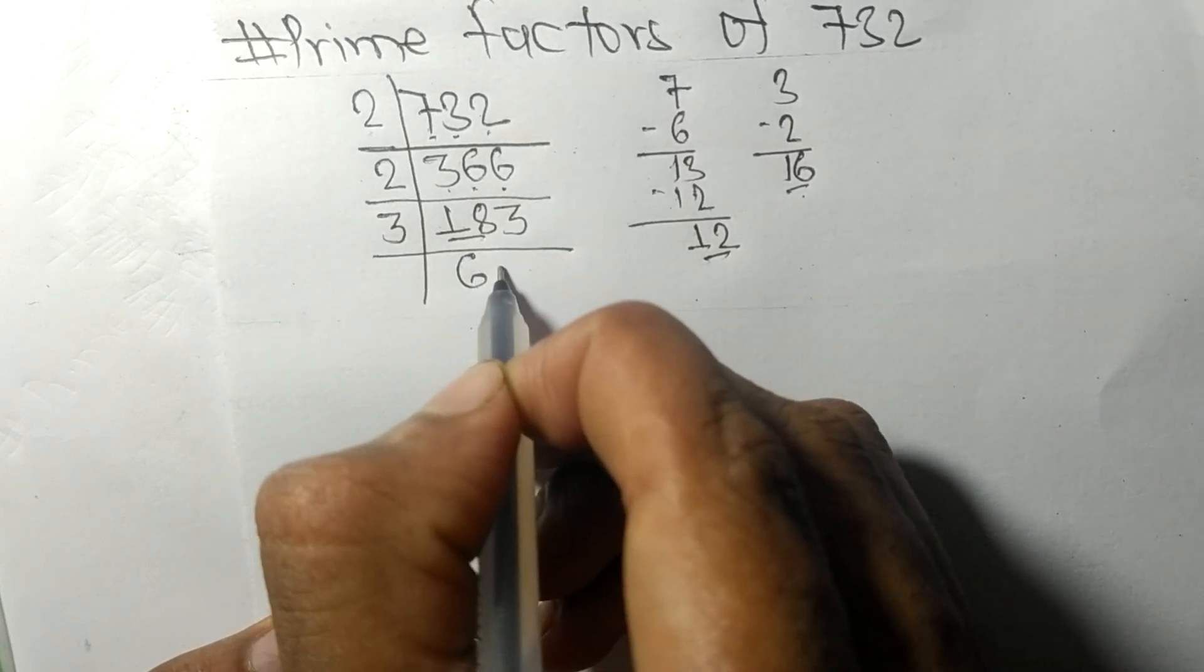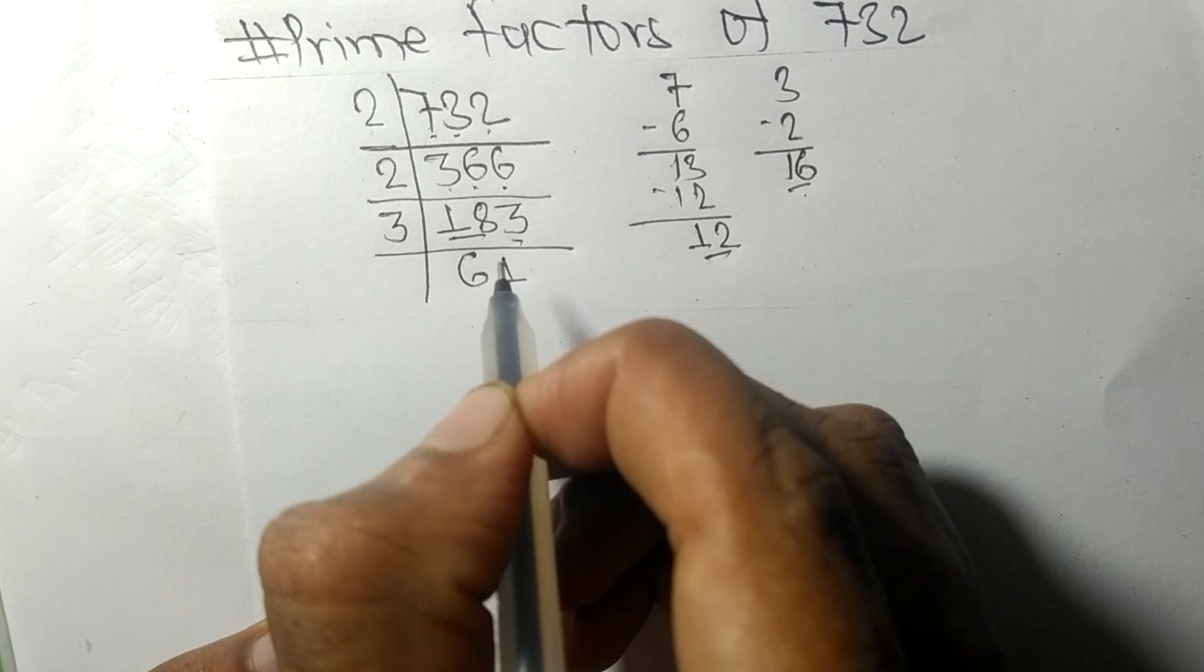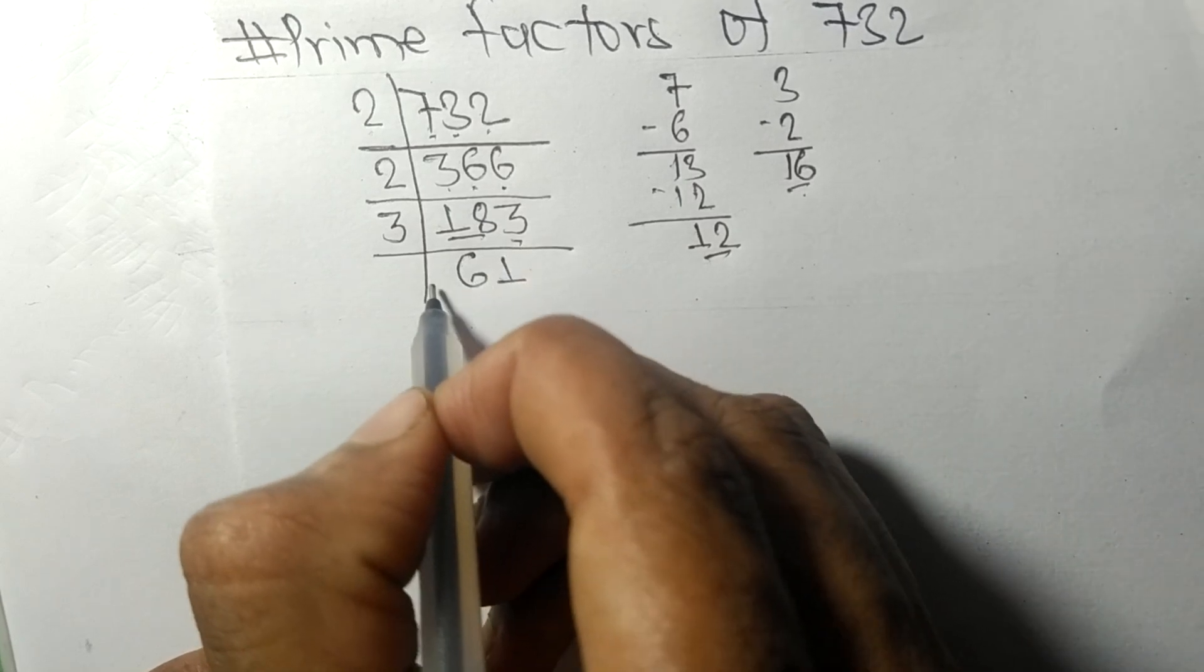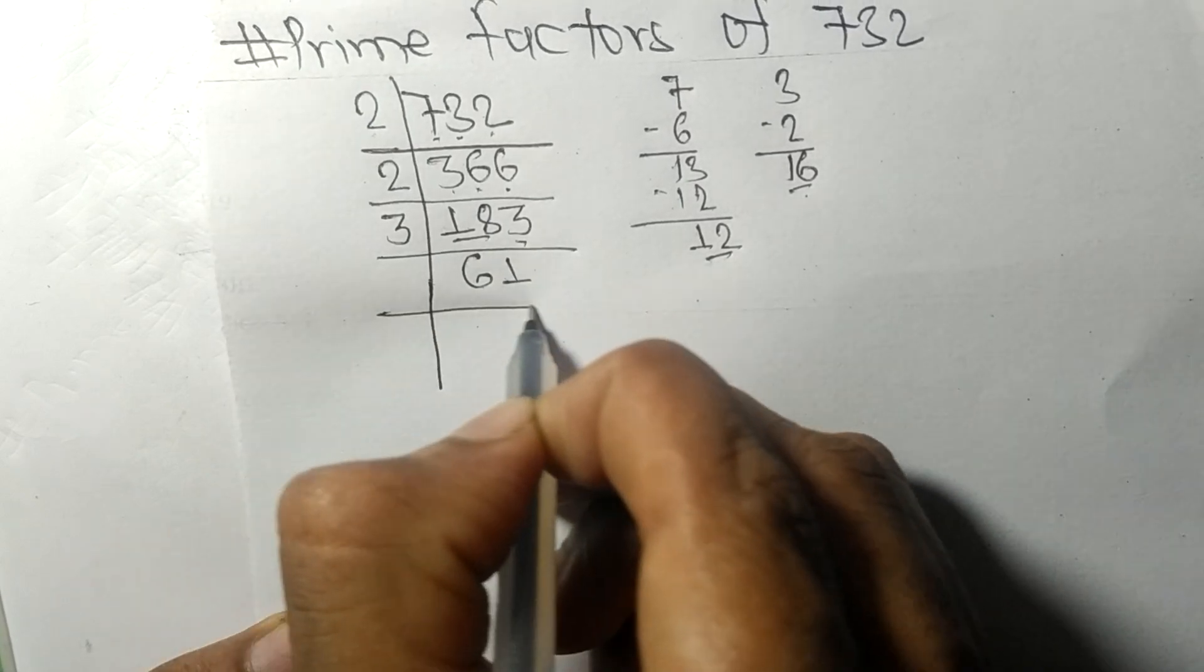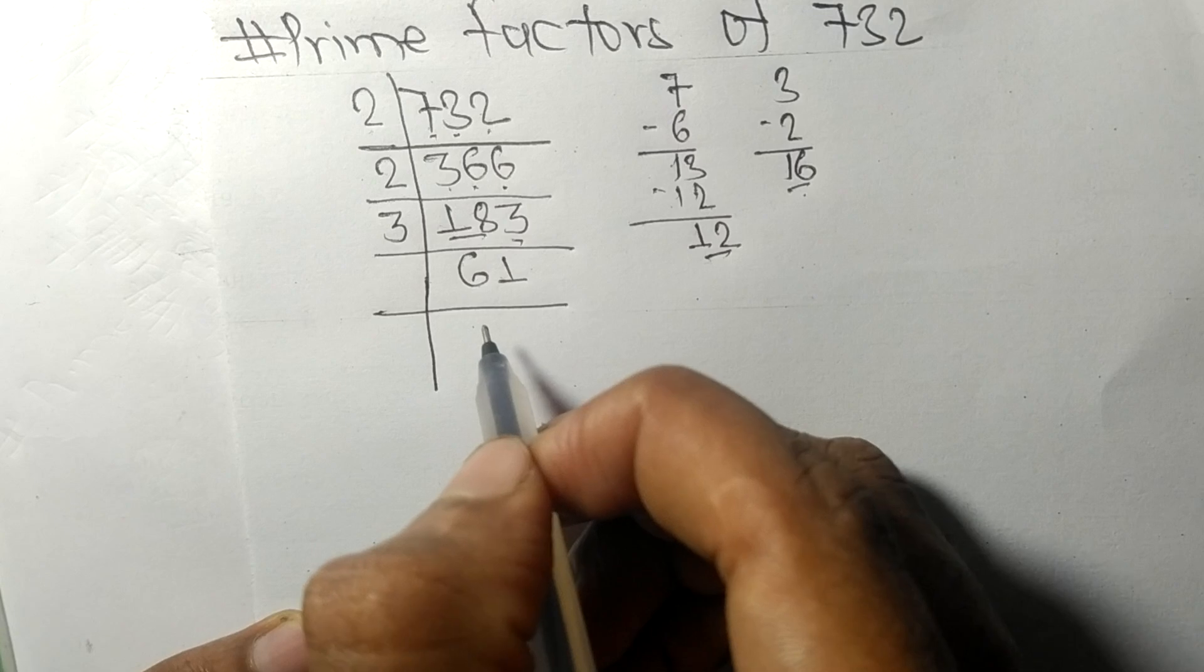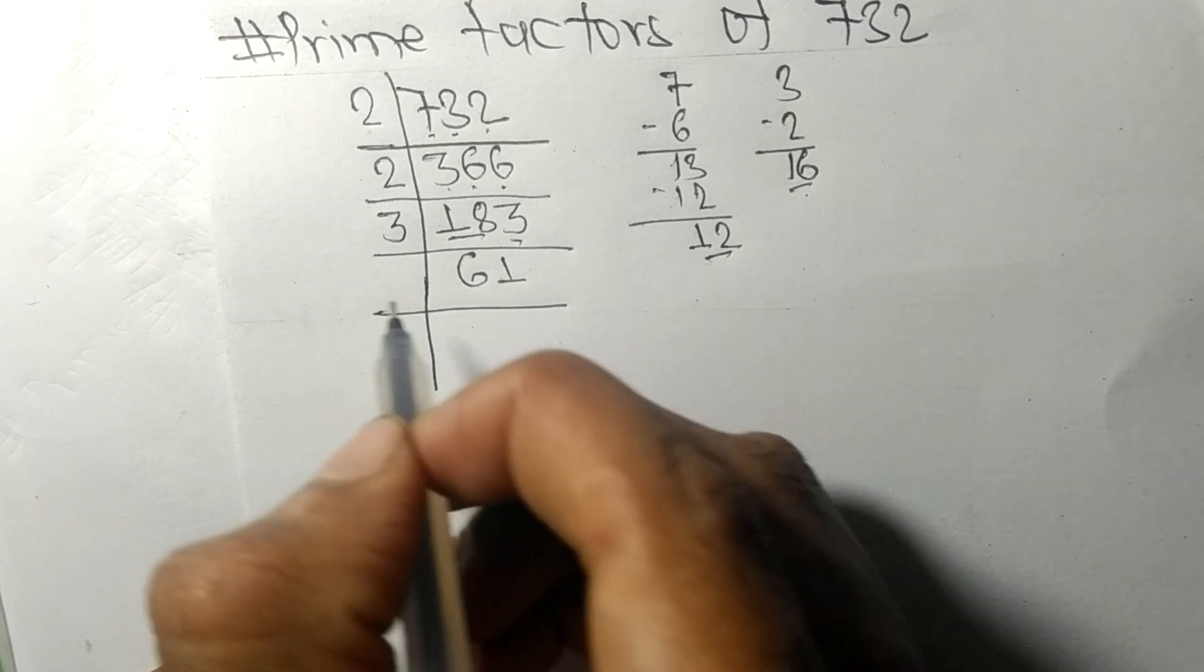So now we got 61, which is a prime number, so it is exactly divisible by 61 only.